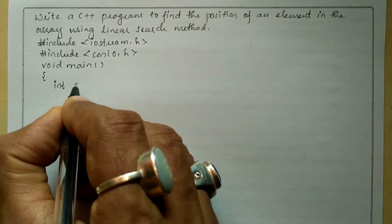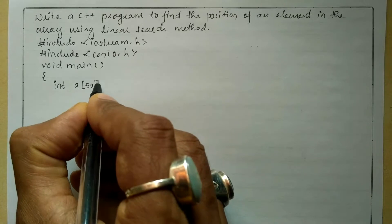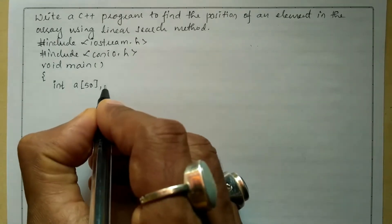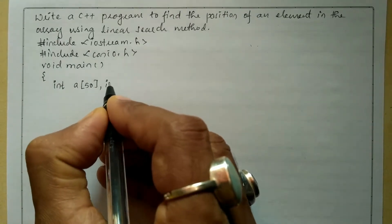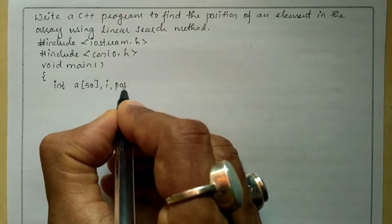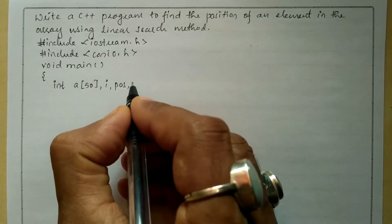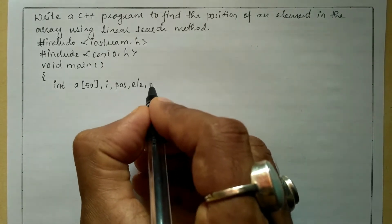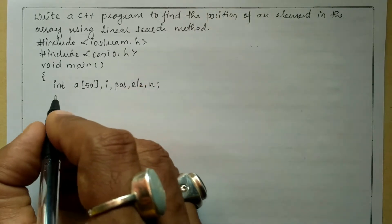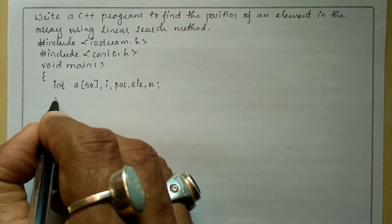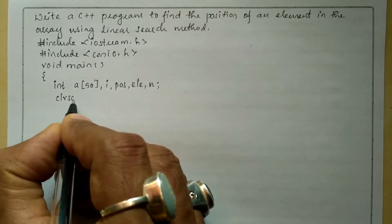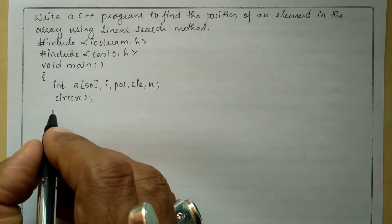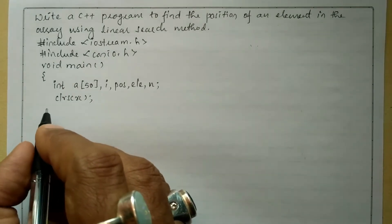With data type int: a of size 50 — so it is an array of size 50 — comma i is the index, pos is the position, ele is the element that is to be searched, n is the number of elements that is to be inserted in the array. Next we'll write clrscr() function which is used to clear the screen.